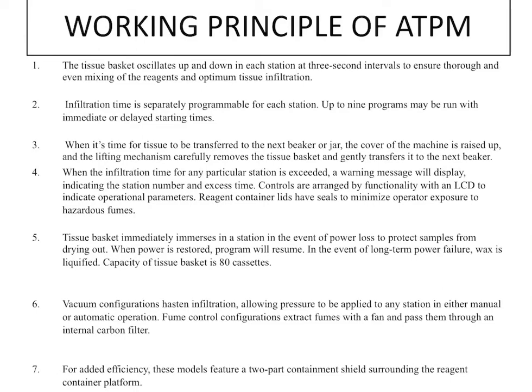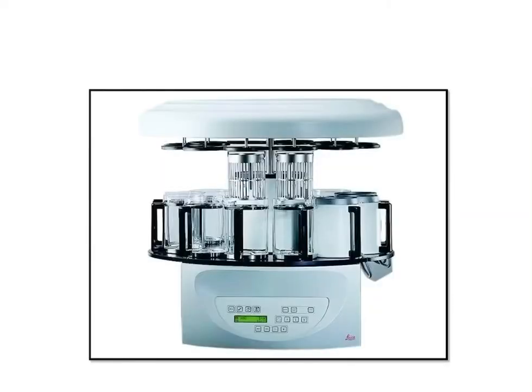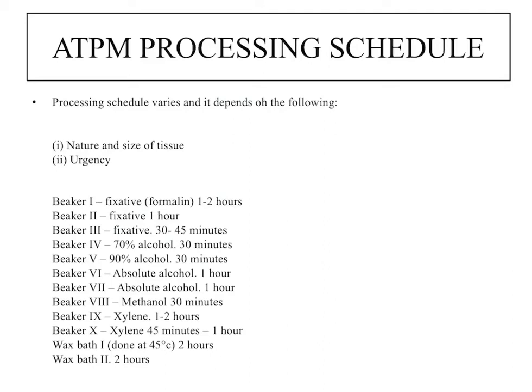For added efficiency, these models feature two-part containment shields surrounding the reagent containers. This is the machine I showed you earlier. This is our processing schedule, which is the same as in manual processing. In the first step, fixative is applied for 1 to 2 hours, the second fixative for 1 hour, and the third fixative for 30 to 40 minutes. Then dehydration starts with 70% alcohol, 90% alcohol, then absolute alcohol. Next, clearing with xylene, then wax baths for infiltration and embedding. The schedule depends on tissue size and urgency.